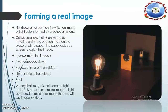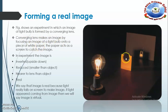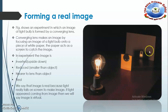Now we will see how a real image is formed. The figure shows an experiment in which an image of a light bulb is formed by a converging lens. The converging lens makes an image of the light bulb onto a screen — a piece of white paper that acts as a screen to catch the image.